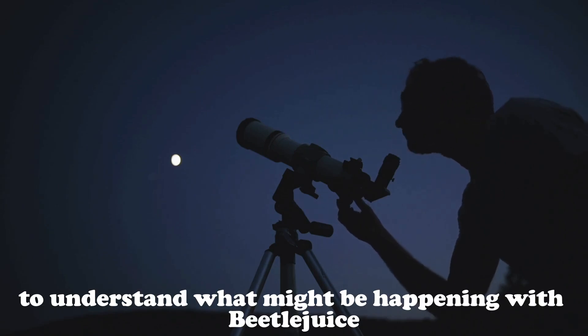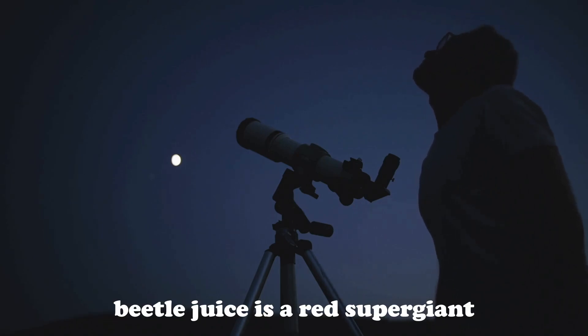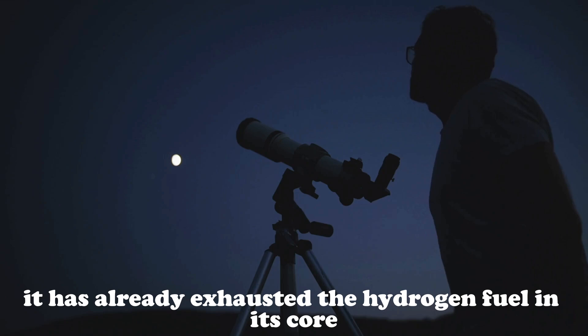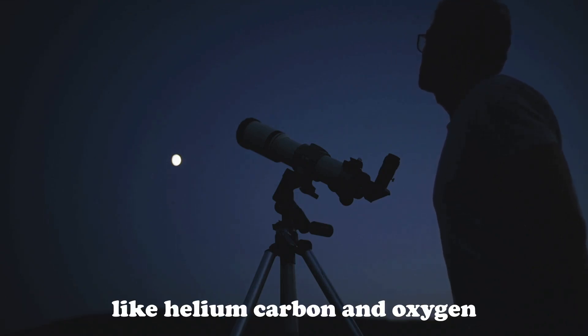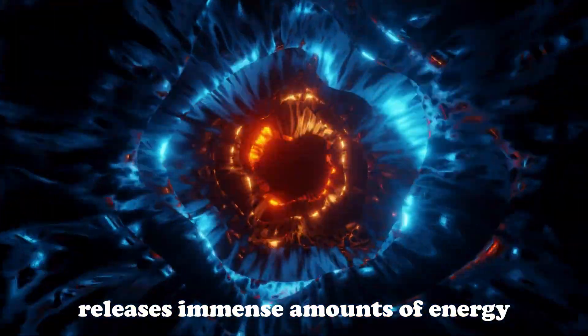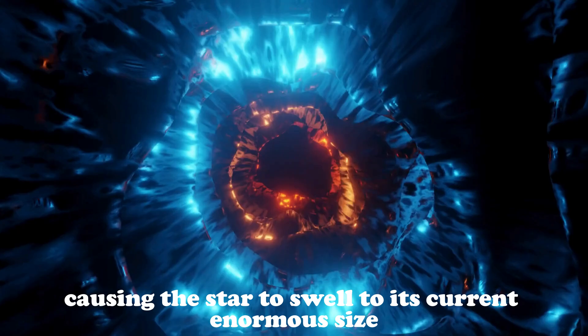To understand what might be happening with Betelgeuse, it's important to consider its current stage in the stellar life cycle. Betelgeuse is a red supergiant, which means it has already exhausted the hydrogen fuel in its core and is now fusing heavier elements like helium, carbon and oxygen. This process of nuclear fusion releases immense amounts of energy, causing the star to swell to its current enormous size.